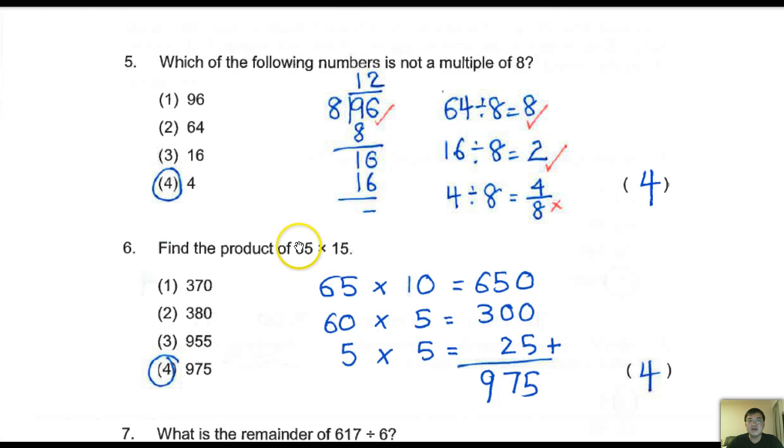Let's carry on to the next one, number 5. Which of the following numbers is not a multiple of 8? The best and fastest way to do this is to use that number, divide them by 8. Divide by 8 and you should be able to get an answer without any remainder.